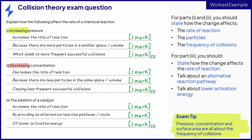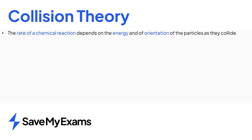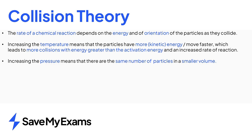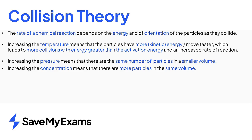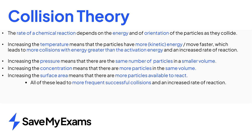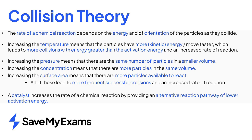Remember that pressure, concentration, and surface area should all talk about the frequency of collisions. In summary, the rate of a chemical reaction depends on the energy and orientation of the particles as they collide. Increasing the temperature gives the particles more kinetic energy so they move faster, leading to more collisions with energy greater than the activation energy and an increased rate of reaction. Increasing the pressure means the same number of particles in a smaller volume; increasing the concentration means more particles in the same volume; increasing the surface area means more particles available to react — all leading to more frequent successful collisions and an increased rate of reaction. Finally, a catalyst increases the rate of reaction by providing an alternative reaction pathway of lower activation energy.